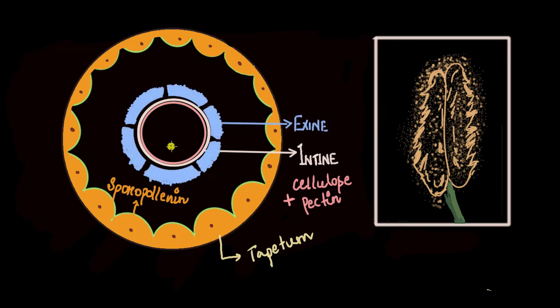And this sporopollenin is actually a chemical substance which is one of the most resistant organic compounds known. This sporopollenin makes up the exine. So imagine the kind of resistance or protection this microspore or pollen gets.